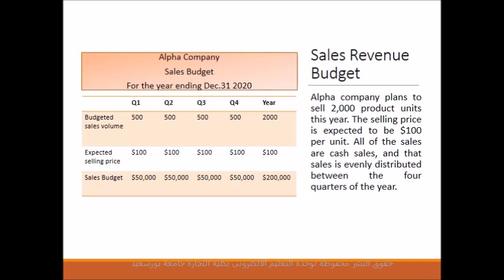Alpha Company is a manufacturing company that plans to sell 2,000 product units this year at a selling price of $100 per unit. All sales are cash sales, distributed evenly across the four quarters of the year — so 500 units are expected to be sold each quarter. Multiplying 500 units by $100 per unit gives a budgeted sales revenue of $50,000 per quarter and $200,000 for the entire year.